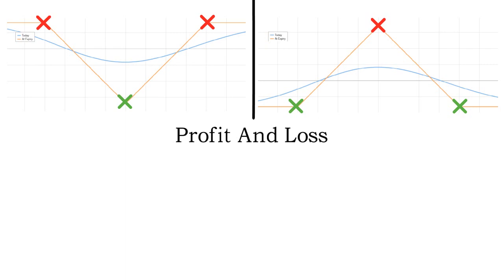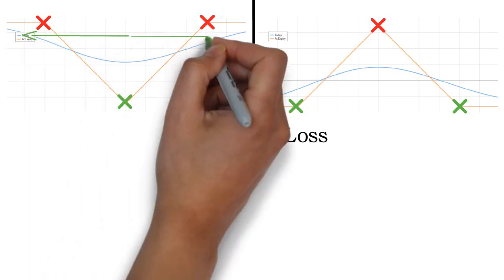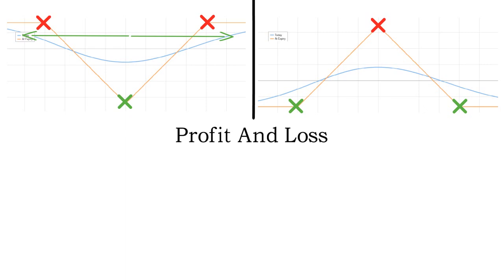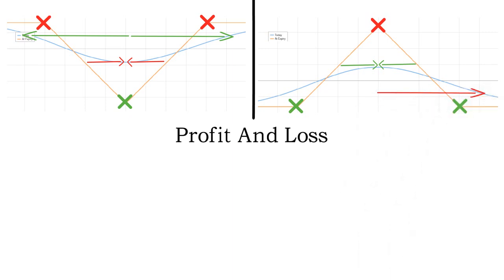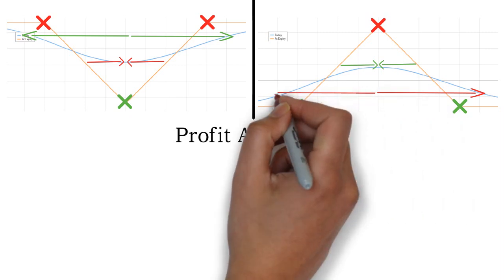Now that we have the setup covered, I will present the profit and loss of butterfly spreads. On the payoff diagram of the short butterfly spread, the underlying asset price has to move beyond one of the strikes of the short options to achieve max profit. If the price does not move enough, a loss will occur. Max loss only occurs if the price of the underlying is exactly on the strike price of the long options. For long butterfly spreads, a profit is achieved if the price does not move a lot, and max profit is achieved if the price is exactly at the short strikes on expiration. If the underlying price moves further than one of the long strikes, max loss will occur.